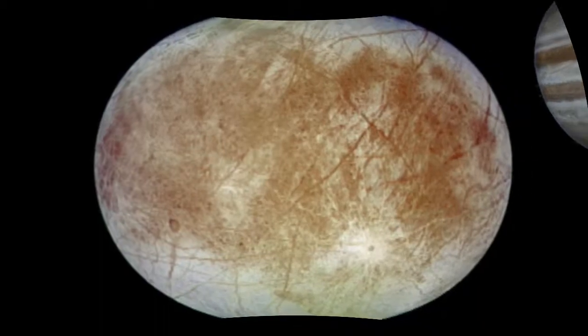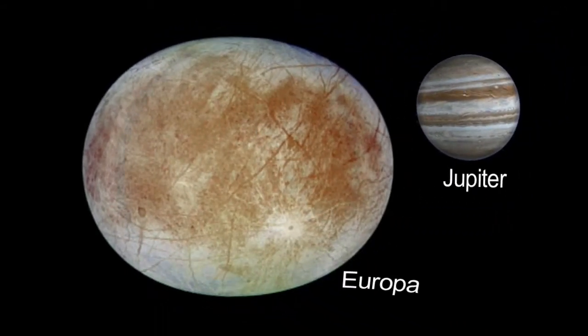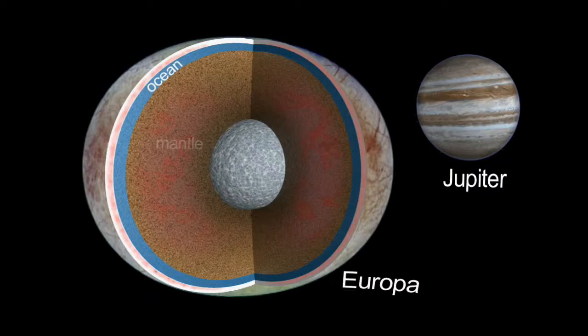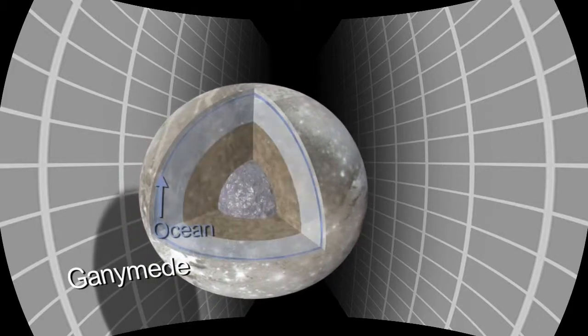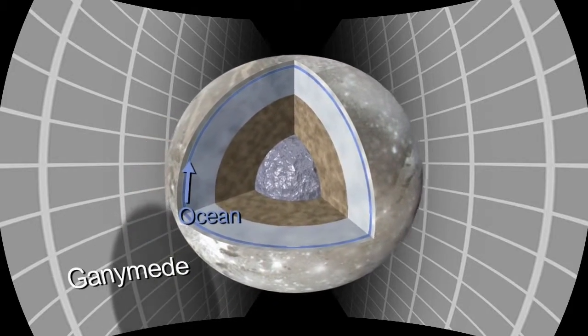Europa is a maybe rarer example of an ocean in contact with a rocky mantle. Ganymede actually might be a more common example of an ocean where it's an ocean sandwich, ice above and below.